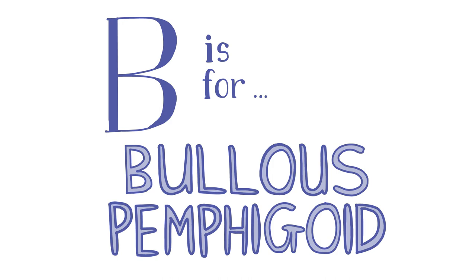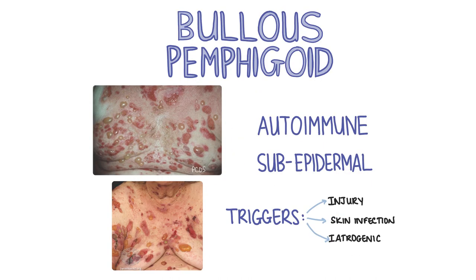B is for bullous pemphigoid. Bullous pemphigoid is an autoimmune condition causing sub-epidermal blistering of the skin. An injury, a skin infection, or drugs like gliptins, antibiotics or furosemide can trigger the onset of disease. Bullous pemphigoid is more common in elderly patients, particularly those with neurological diseases like Parkinson's.